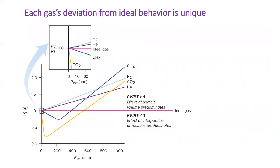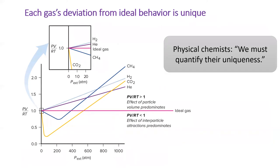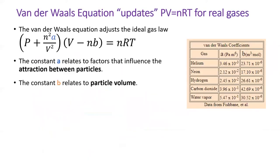Each gas's non-ideal behavior is unique, as shown on this figure. Physical chemists have devised a way to mathematically explain the deviations from ideal behavior for each unique gas. It is called the van der Waals equation of state. The van der Waals equation updates PV = nRT by describing real gases using two coefficients, A and B, which are different for each gas.